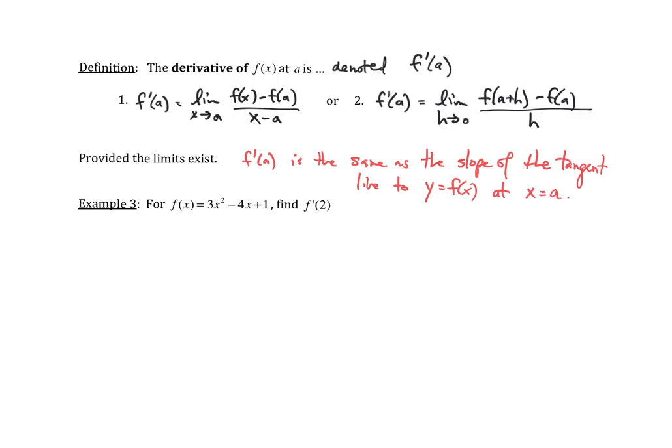It turns out that the derivative is also the instantaneous velocity if your function was the position function, but we'll discuss that idea more in the future. Let's work through some examples together in class later. Take care.